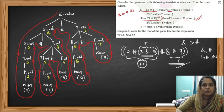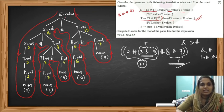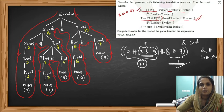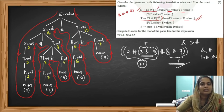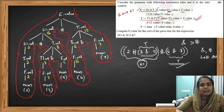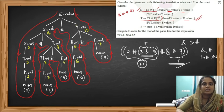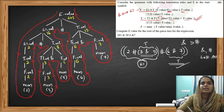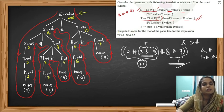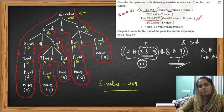We move forward to the root of the parse tree and see the reduction E produces E1 hash T. The translation rule is to multiply the values of E1 and T and store the result in E. E1 dot value is 16 and T dot value is 13, so 16 multiplied by 13 equals 208. Therefore E dot value equals 208, which is our final answer.